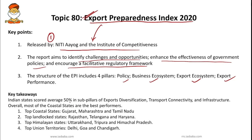Key takeaways: Indian states scored an average of 50% in sub-pillars of export diversification, transport connectivity, and infrastructure. Overall, most of the coastal states are the best performers. Top coastal states are Gujarat, Maharashtra, and Tamil Nadu. Top landlocked states are Rajasthan, Telangana, and Haryana. Top Himalayan states are Uttarakhand, Tripura, and Himachal Pradesh. Top union territories are Delhi, Goa, and Chandigarh.